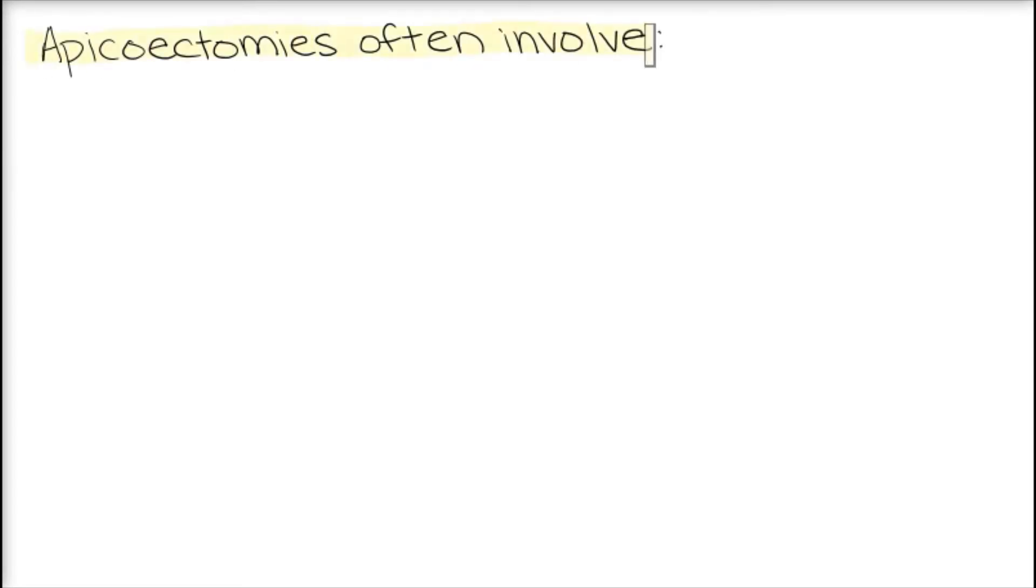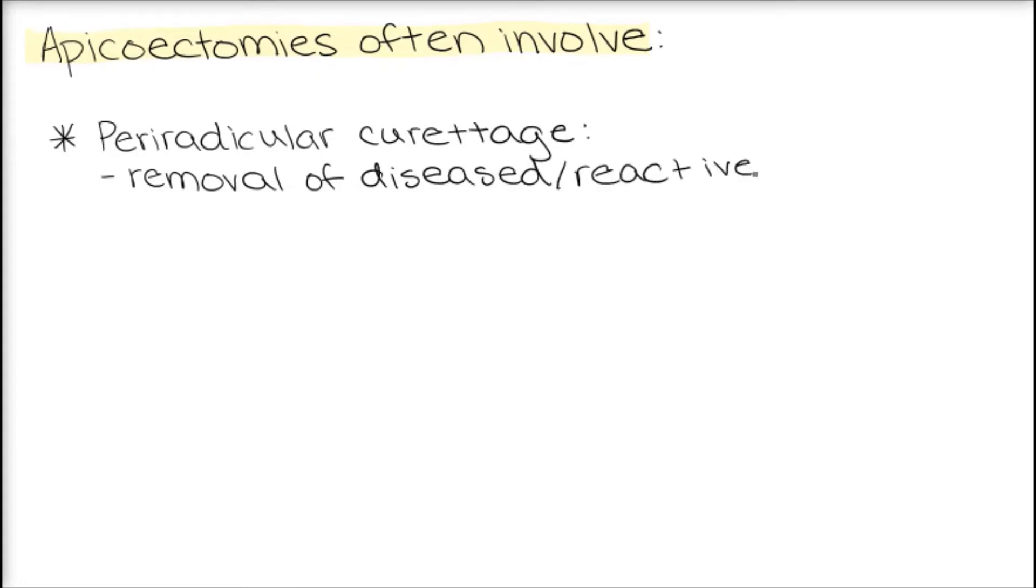Apicoectomies are often done in conjunction with two other procedures. The first of these is periradicular curettage, where diseased and reactive tissue, as well as any foreign material at the apex of an endodontically treated tooth, is removed.